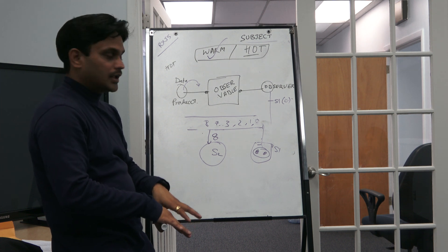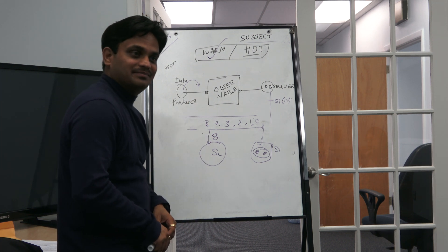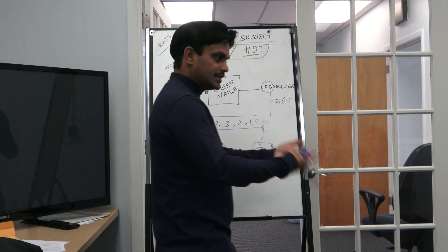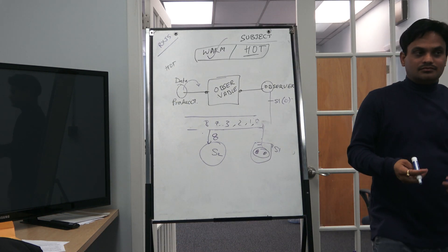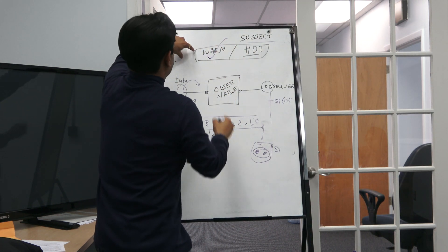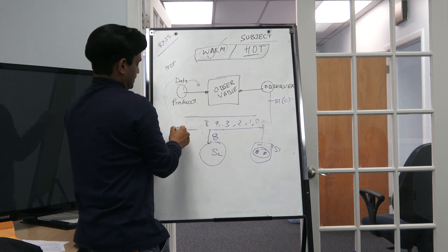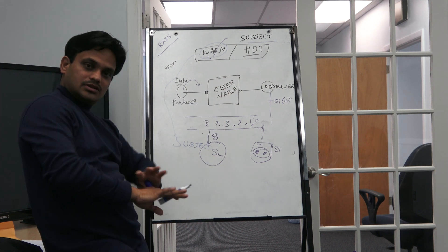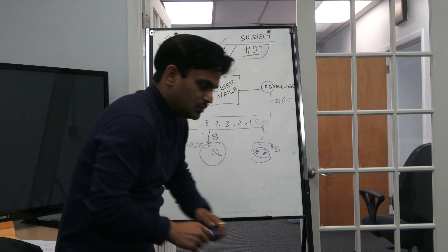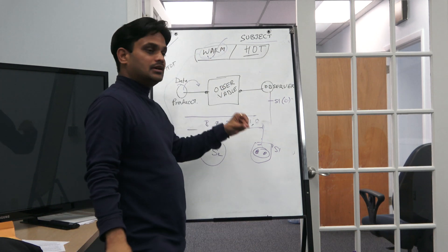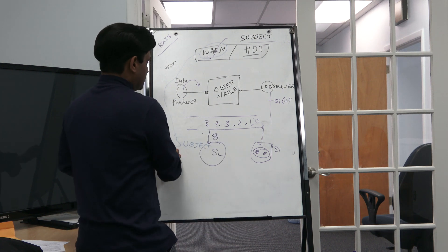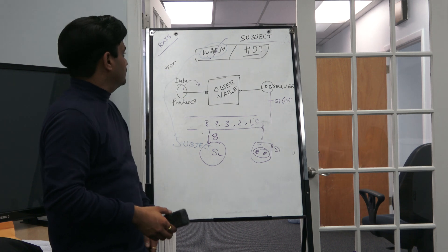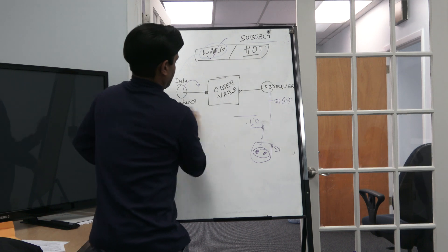The ready-made example of a warm observable in RxJS is Subject. Whenever you need this behavior, just use Subject — it takes care of everything. When there's a first subscriber, Subject starts getting data, and after that it is multicast, meaning everybody receives the same data.